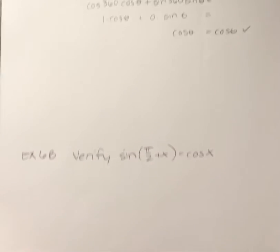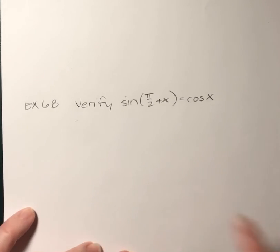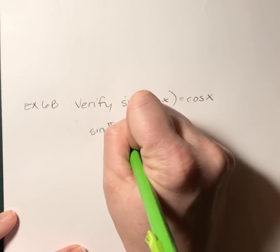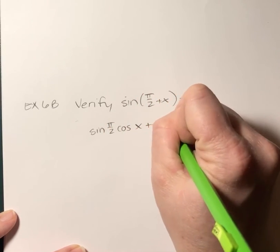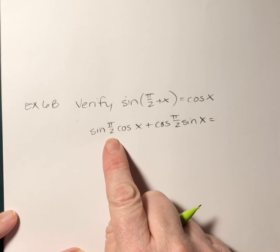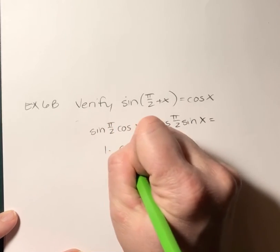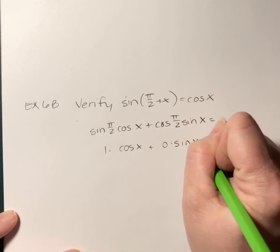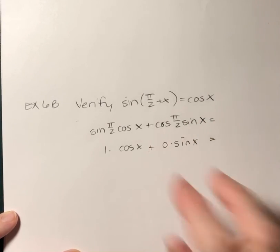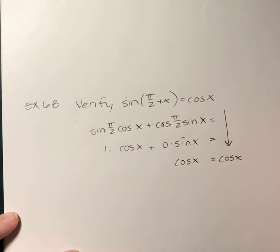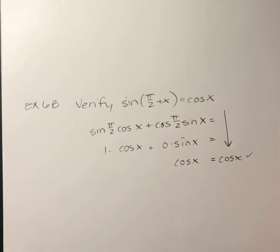And one more. Sine of a sum. Sine, cosine, cosine, sine. Sine of pi halves is 1. Cosine of pi halves is 0. 0 times sine of x is 0. And I'm just left with cosine of x. Aren't these a whole lot better than the last identities that we had? They're pretty much set up for you, especially if you know all your values.